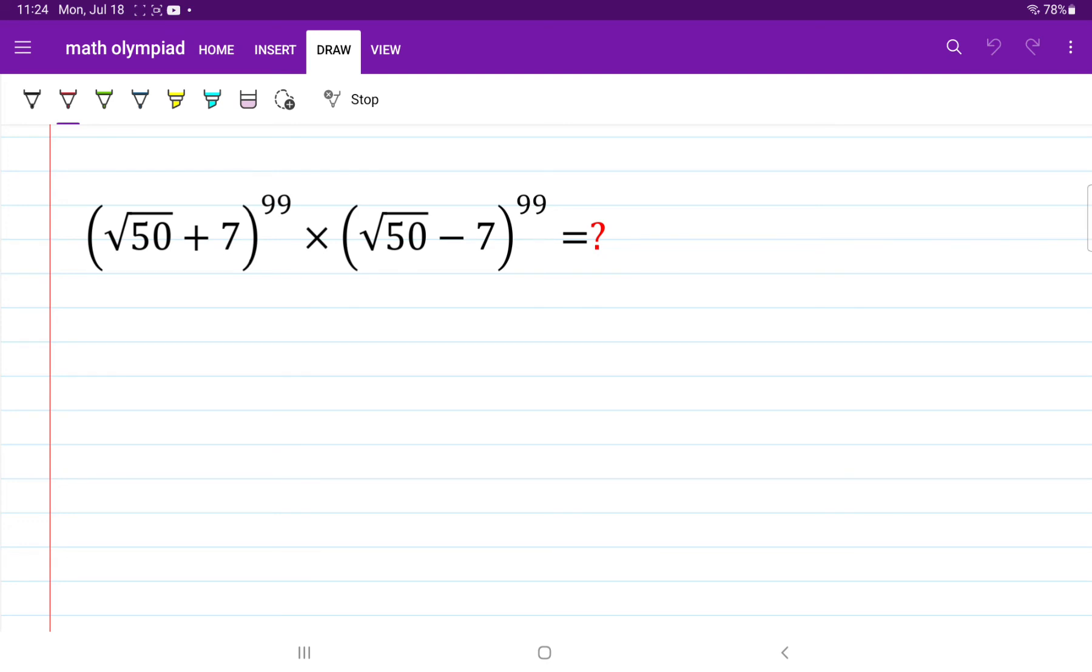In this video, we are trying to find the product of square root of 50 plus 7 and square root of 50 minus 7, both raised to the power of 99.